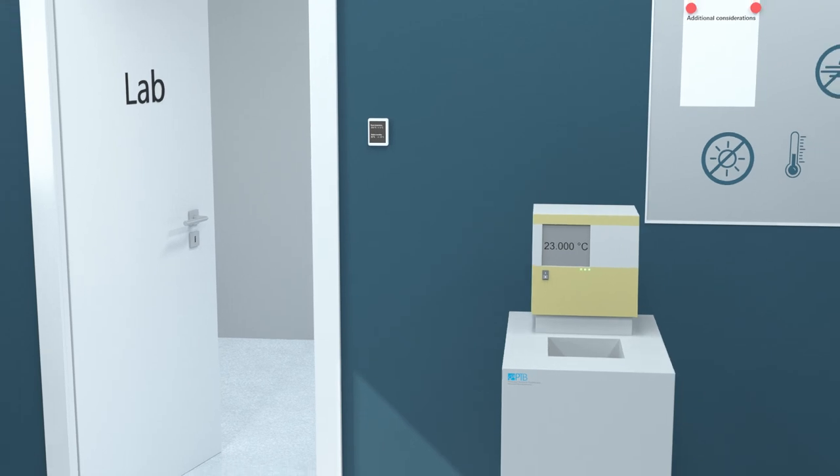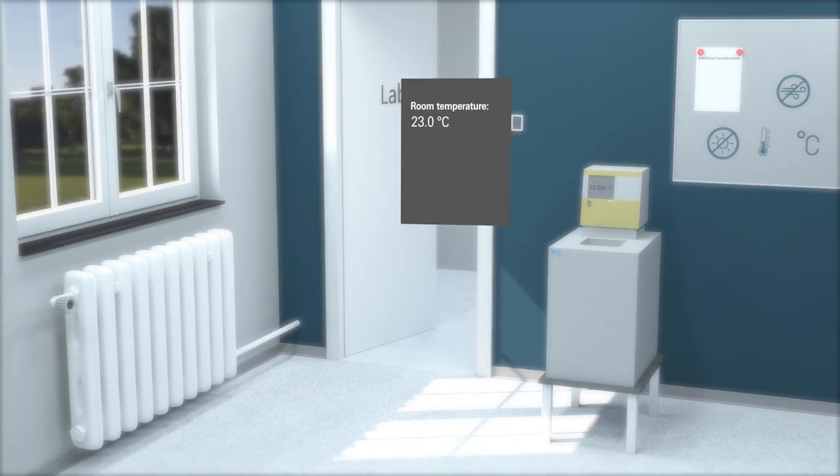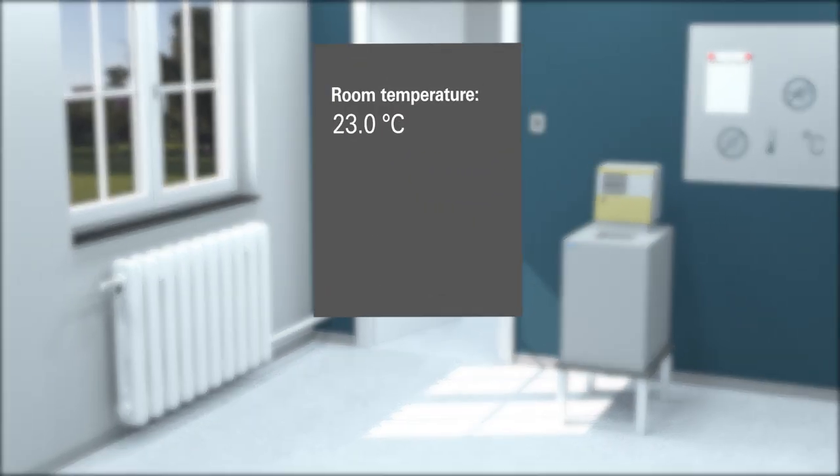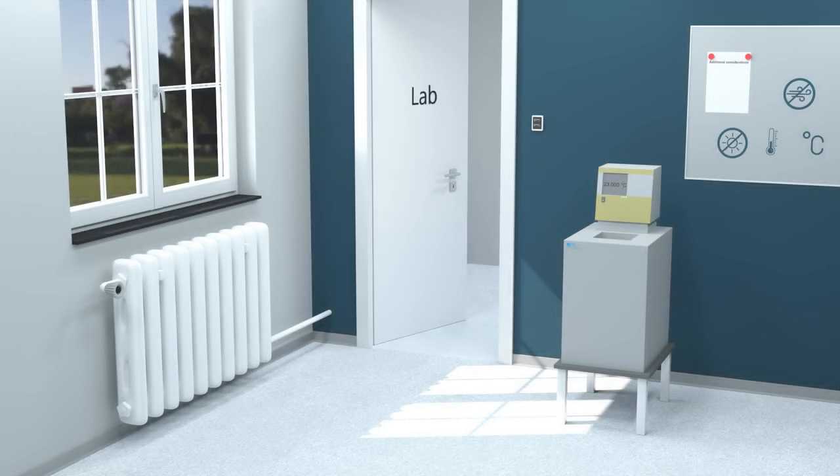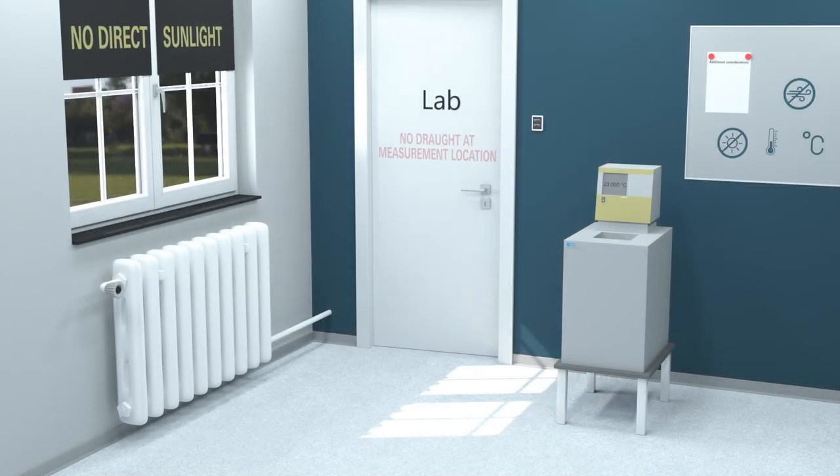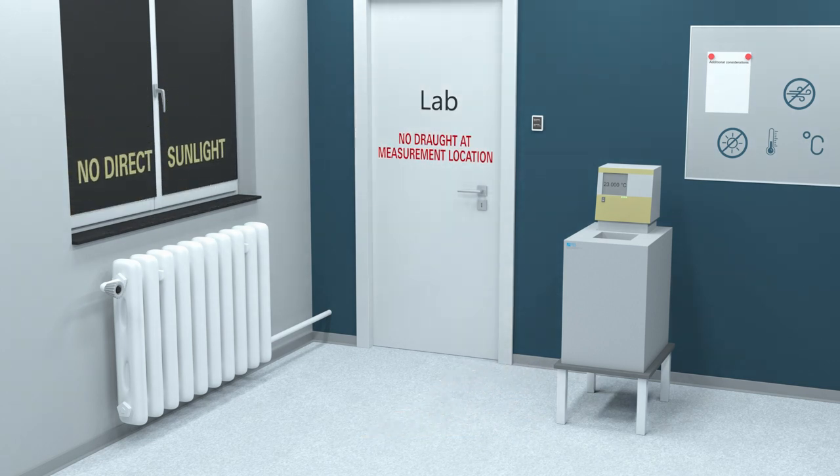The general requirements for the room conditions are: The room temperature needs to be 23 degrees Celsius, plus or minus 5 degrees. The relative humidity must be 50%, plus or minus 20%. There should be no direct sunlight and no draft at the measurement location.